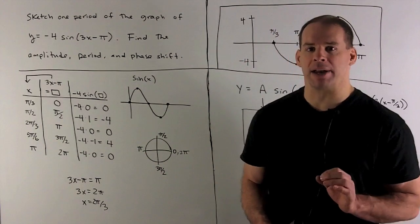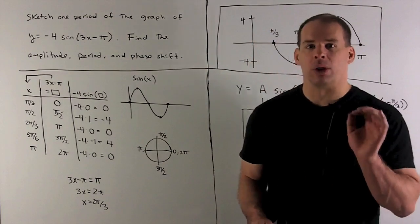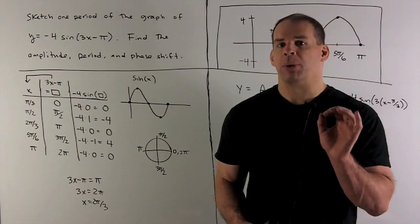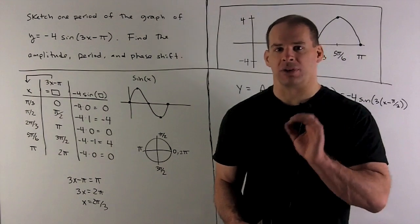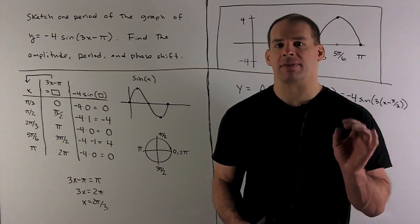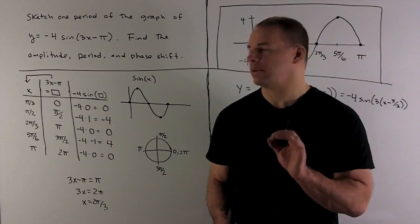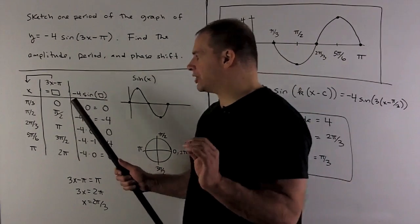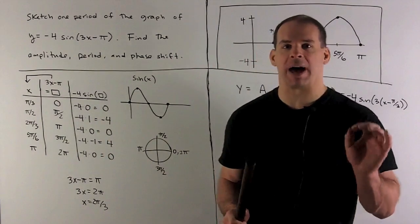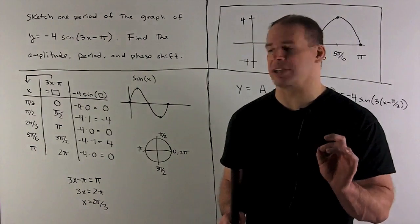I'm going to multiply them by minus 4. So those are the values that come out — those are going to be the only values that I need. The only catch is we're not putting box into our function to get the graph — we're putting x in. So we're going to have to solve for x in terms of box. The relation is: what are we putting into sine? We're putting 3x minus pi into sine. So we're going to let that be equal to box and then solve for x.